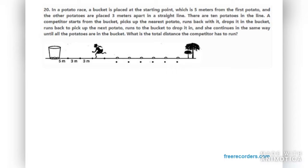Let's start with question number 20. In a potato race, a bucket is placed at the starting point which is five meters from the first potato.